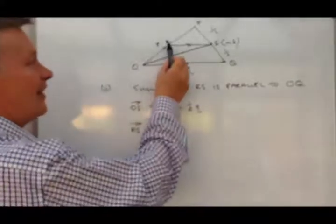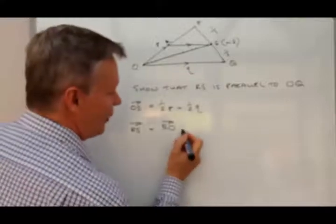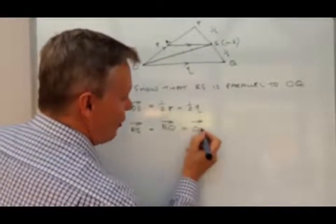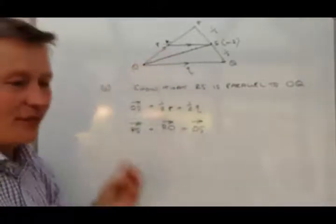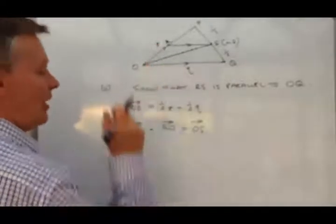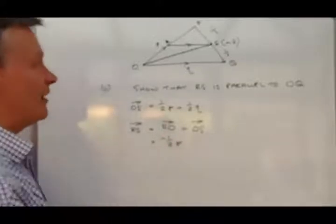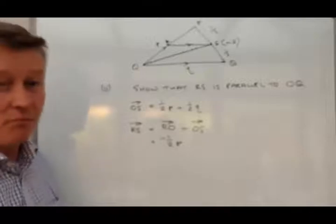Alright, so we're here. We've got to go from R to O, and then we've got to go from O to S. So plus OS. Alrighty, so let's have a look at that. Well, if we're going from there to there, then we know that is going to be minus a half P. Now the reason it's minus a half P is because this is a midpoint. We're also told this is a midpoint.